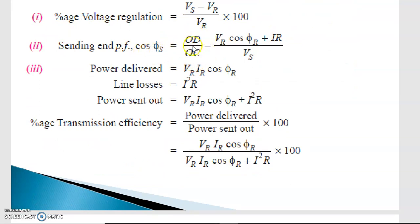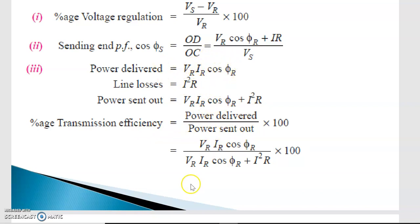The power delivered is Vr · IR · cos φr, which is the power at the receiving end or load side. Total line losses are I²R losses. Power sent equals Vr · IR · cos φr plus the losses. Percentage transmission efficiency = (Vr · IR · cos φr) / (Vr · IR · cos φr + I²R) × 100.